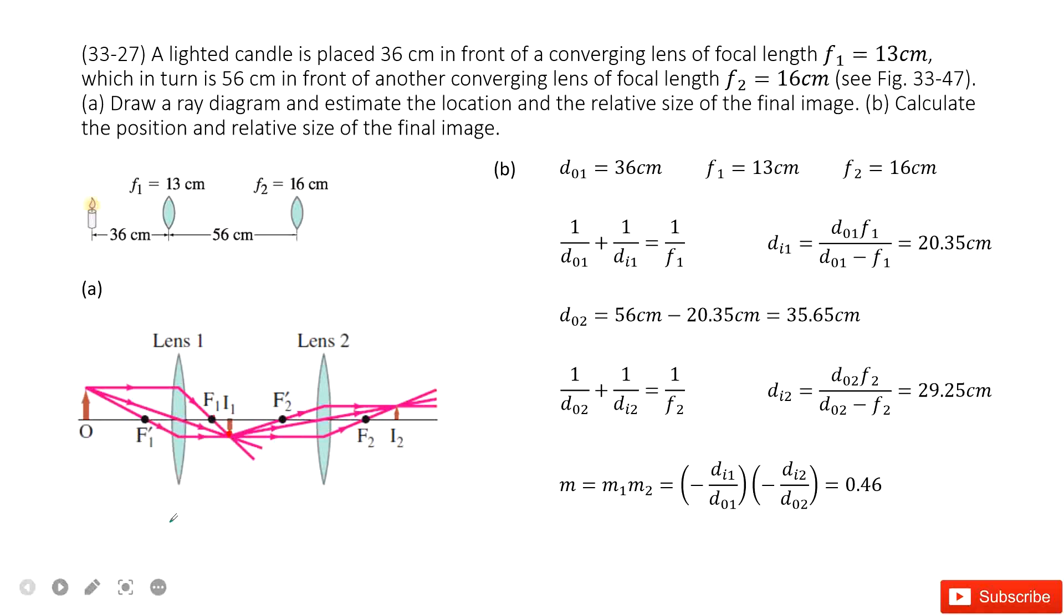Let me change the color. See, this is the intersection. This intersection is the tip for this image. We can see this is I1. This is the image. So it is inverted, right?